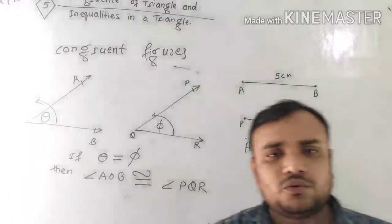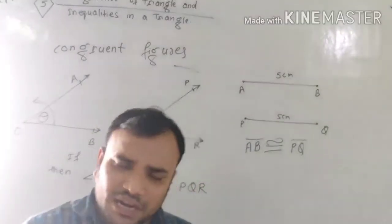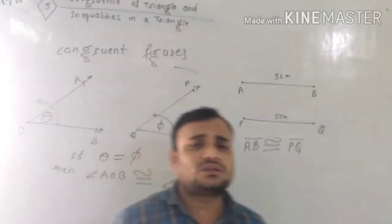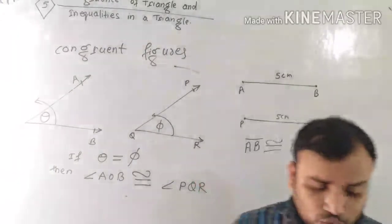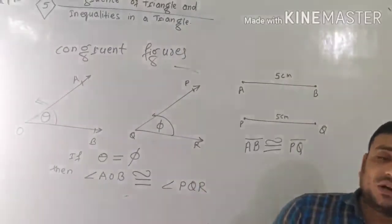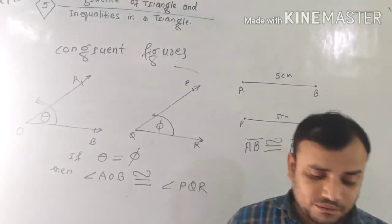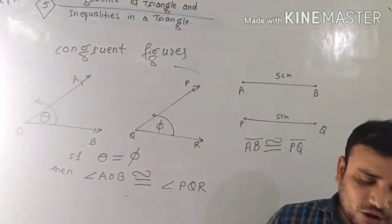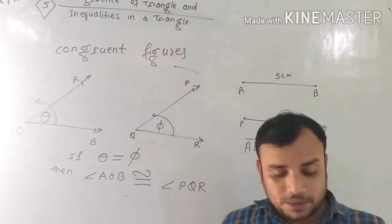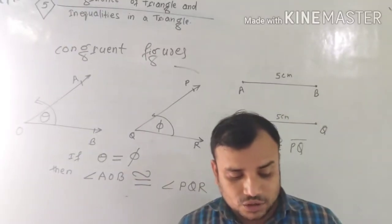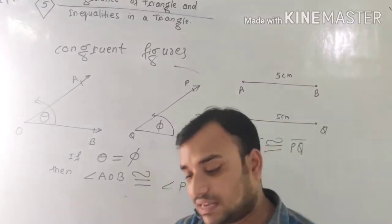In this chapter, we will discuss mainly congruent triangles. Two triangles are congruent if and only if one of them can be superposed on the other so as to cover it exactly.